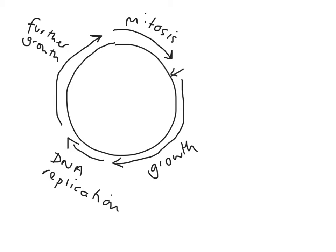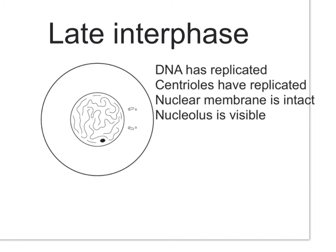Mitosis is a relatively short stage of the overall cell cycle and it results in the production of two genetically identical cells. This is a cell in late interphase. You can see that the nuclear membrane is intact and the nucleolus is still visible. Centrioles have replicated in preparation for forming the spindle fibres.